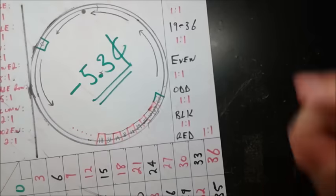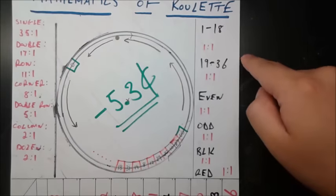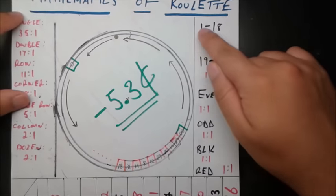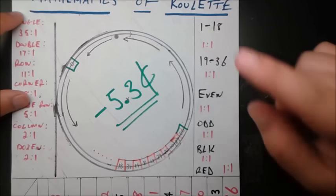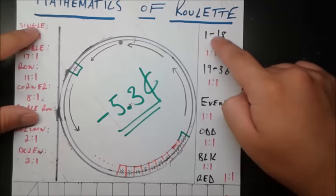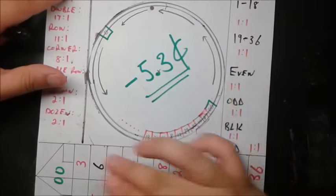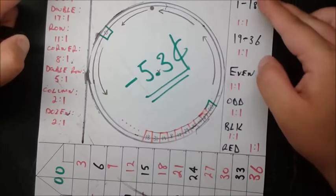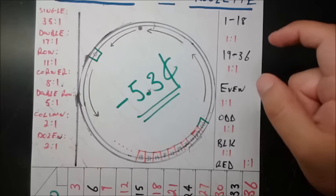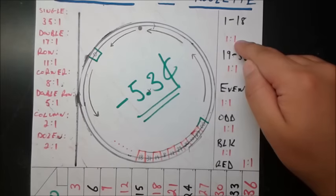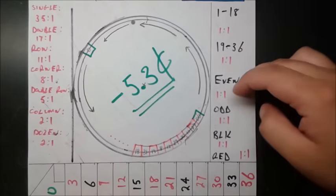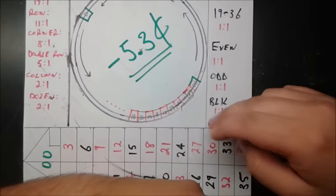For example, the lowest payout you can get is 1 to 1, which means you put down $1, and if that event happens, you'll get $1 back. Those include getting something like 1 through 18, which is called low numbers. Notice: 1 through 18 is 18 numbers out of 38 total, so that's a little bit under a half. So we see that already this is in the casino's advantage because you're just getting a 1 to 1 payout. High numbers, even numbers, odd, black, red — all 1 to 1.